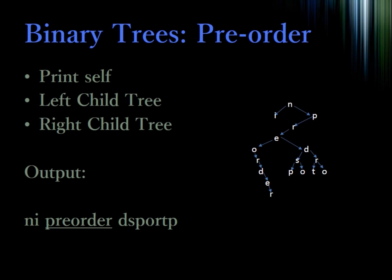The first type of binary tree traversal is the pre-order traversal. In a pre-order traversal, we start at the root node, and we print the current node, then we explore the left child tree, and then we explore the right child tree. When we're exploring one of the children trees, we act as if that node is the root of a smaller tree and continue this process in the same way. This type of behavior is called recursive behavior. Here you can see a sample tree. Since n is the root node, we start with n — we print the self, then explore the left tree which contains only i, then explore the right tree which begins with p, r, e, and then the left tree of e, followed by the right tree of e.